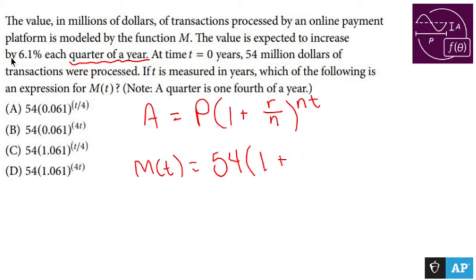It's going to be interesting. The rate is 6.1% each quarter of the year. If it didn't say quarter, we would say 6.1% over four. But since it mentions quarter of a year, we're pretending that that n isn't there. I'm not a fan, but that's obviously what it wants us to do.